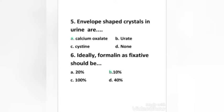Next question: envelope-shaped crystals in urine are: calcium oxalate, urate, cysteine, none. Right answer is option A, calcium oxalate.